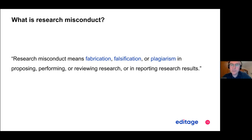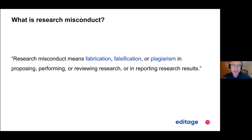There are different types of plagiarism. Most of it you can get around if you properly cite articles, or if you paraphrase instead of copying word for word from a previously published manuscript — you can paraphrase and put ideas into your own words. So that minimizes the text overlap from previously published papers.